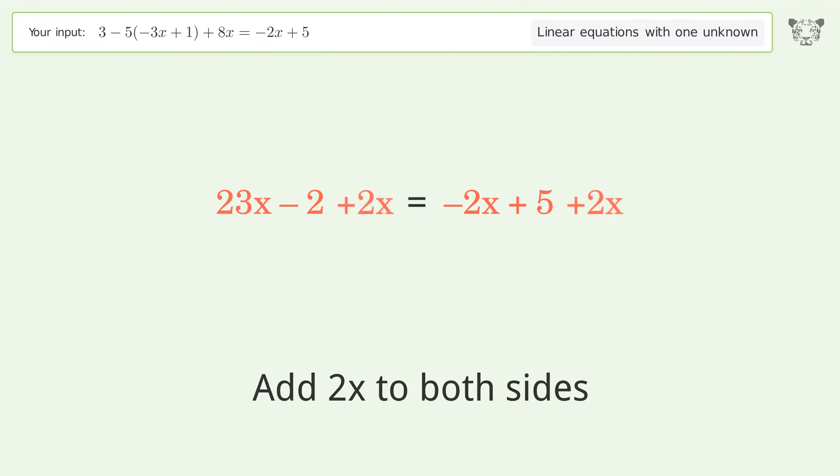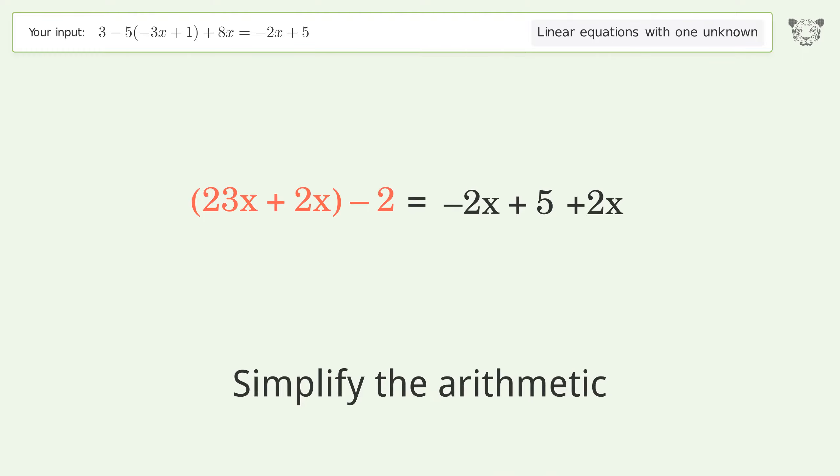Group all x terms on the left side of the equation. Add 2x to both sides. Group like terms. Simplify the arithmetic.